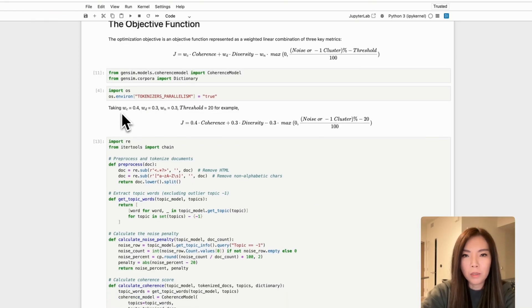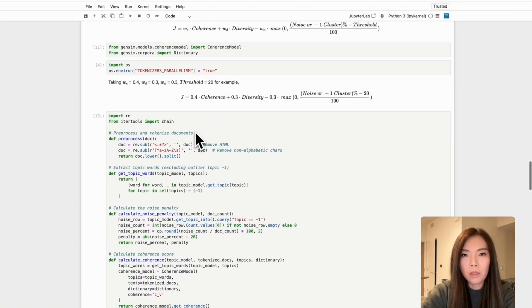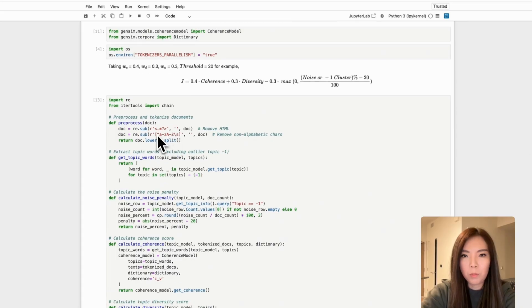Let's dive into an example of how the objective function is constructed and applied to guide topic modeling quality. By setting the weights as Omega_c equals 0.4, Omega_d equals 0.3, Omega_n equals 0.3, and using a noise threshold of 20%, we are creating this objective function. Here's how each component contributes to the final score. Preprocess removes HTML text and non-alphabetic characters, converts the text into lowercase, and tokenizes it into words. It's crucial for cleaning text before analysis.